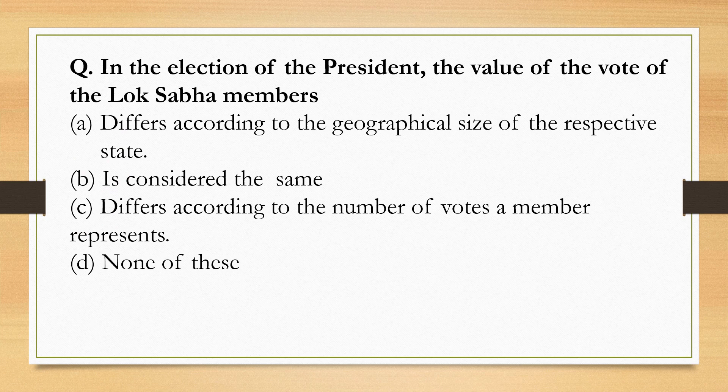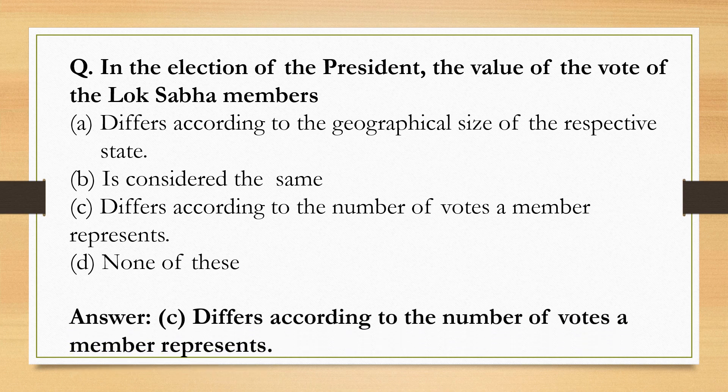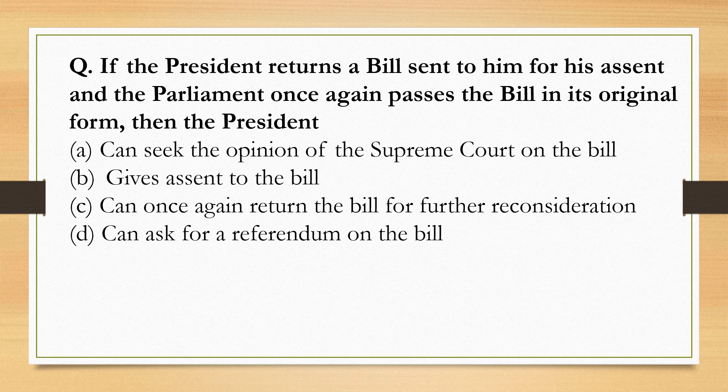If the President returns a bill sent to him for assent and the Parliament once again passes the bill in its original form, then the President has to give assent to the bill. There is no provision to seek the opinion of the Supreme Court, or to return the bill again, or to ask for a referendum on the bill. So the correct option is Option B.